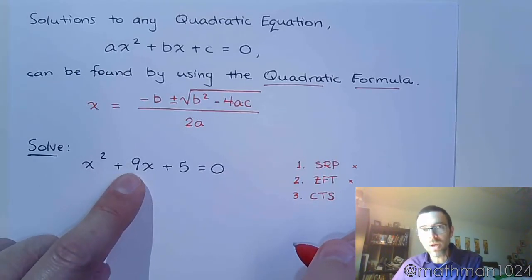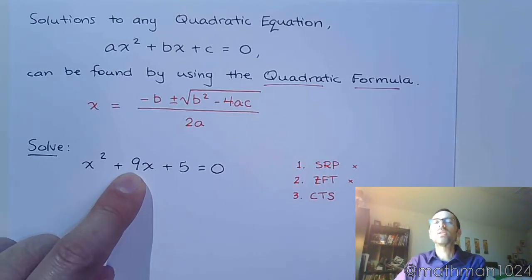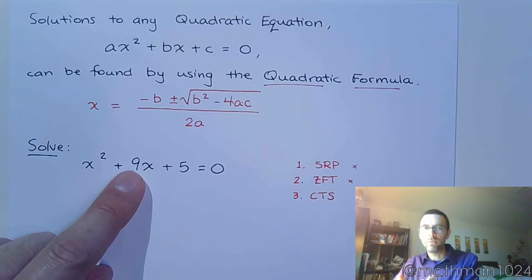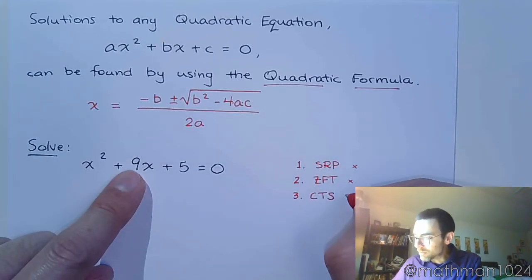But we also wanted the middle coefficient to be even, because part of the process of completing the square is to divide this guy right here by 2. If I divide this by 2, I'm going to get a fraction, and it's not going to be fun. So even though I can complete the square, I'm going to say, let's not do that.